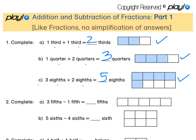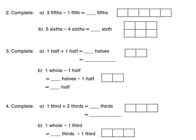Let's move on to 2. Now we are subtracting. So if we start with 3 fifths — we'll shade it here — we start with 3 fifths, and then we need to subtract 1 fifth from there. Minus this 1 fifth means that we are left with 2 fifths. So 3 fifths minus 1 fifth is 2 fifths.